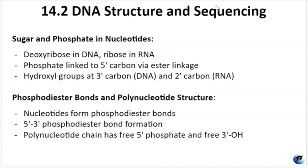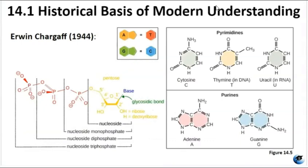The nucleotides are all linked together by phosphodiester bonds, where the phosphate of one nucleotide is attached to the sugar of the next nucleotide, and this creates a chain with a 5' phosphate and a free 3' OH end. The 5-carbon sugar and the phosphate group attached to it, along with either a pyrimidine or a purine, are all the parts of what is called a nucleotide.